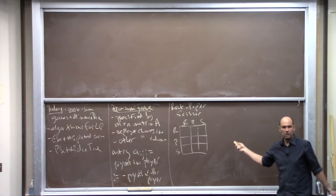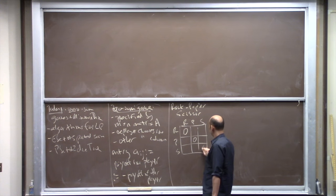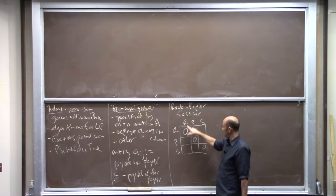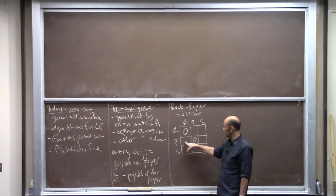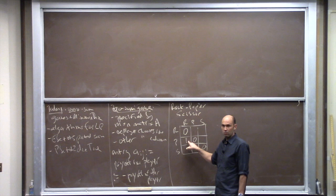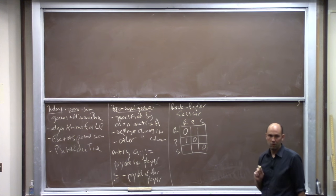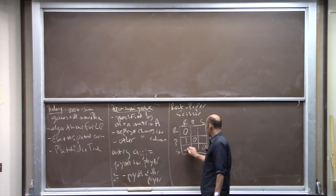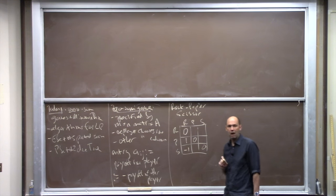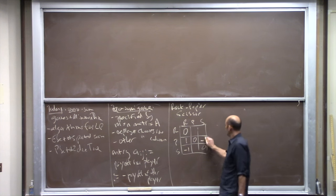For example, in rock, paper, scissors: the diagonal is where two players choose the same action, so that's a draw — zero. Paper beats rock, so if the row player chooses paper and the column player chooses rock, that's a win for the row player — we put a one there, meaning the column player pays a dollar. If the row player plays scissors against rock, that's a loss, so the row player pays a dollar to the column player. In a general zero-sum game you can have any number of rows M, any number of columns N, and entries can be whatever you want.